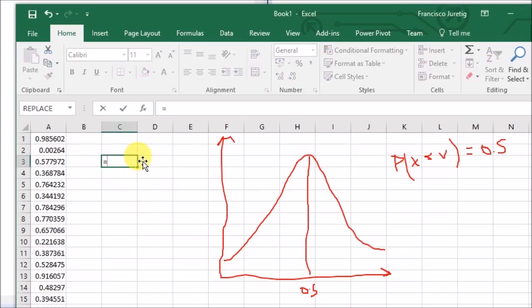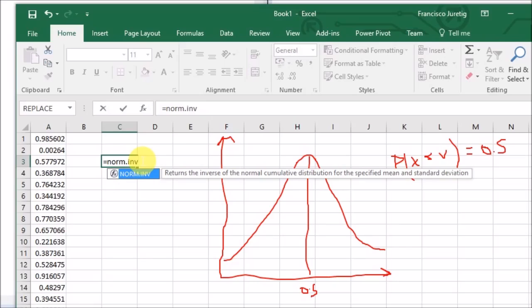I will use NORM.INV. This returns the inverse of the normal cumulative distribution for the specified mean and standard deviation. So I will here put 0.5, let's say that this has a mean of 0 and a standard deviation of 1. So I already know this, this will be 0.